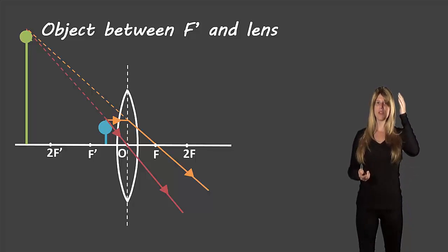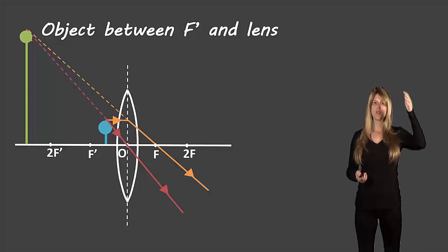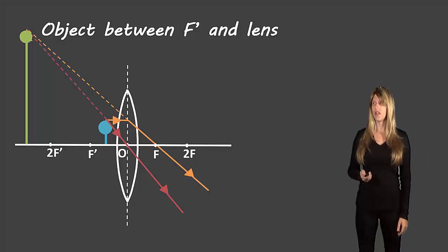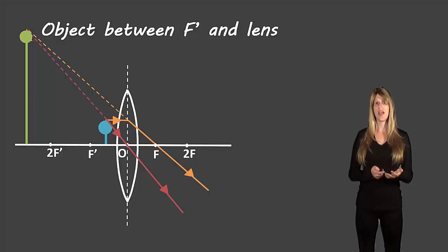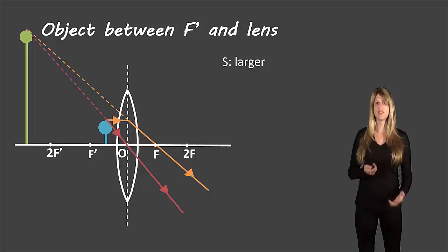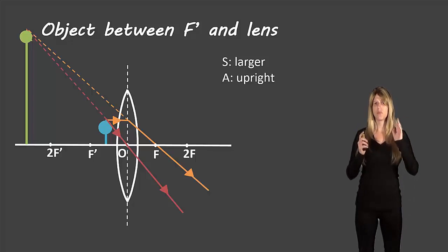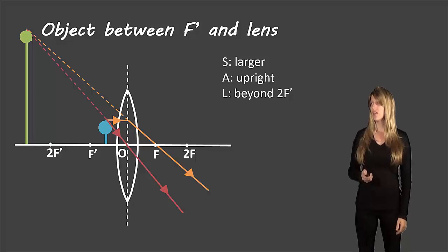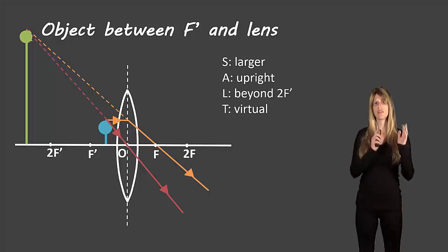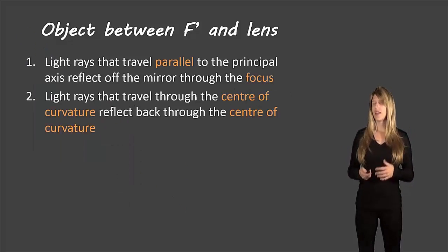We'll draw the balloon — with our original object the string went straight down to the principal axis, so in our image the string will go straight down to the principal axis. We'll have an image on the same side of the lens as the original object. Describing this: it's larger, it is upright because both are facing the same direction, it's located beyond 2f prime, and the type is virtual because it's on the same side of the lens as the original object. Here are those rules if you'd like to copy them into your notebook.